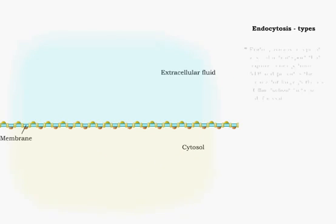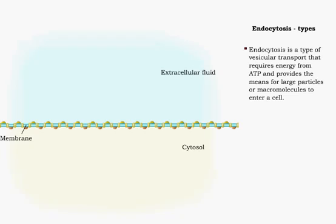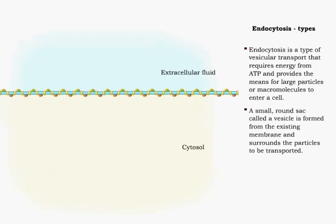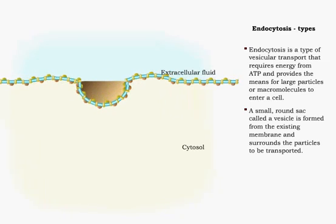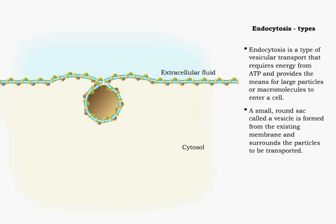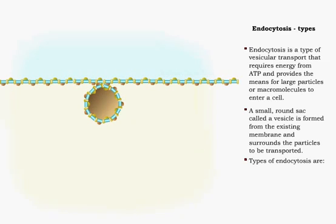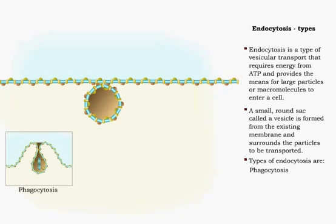Endocytosis is the movement of large particles or macromolecules into the cell. During endocytosis, a small round sac called a vesicle is formed from an existing membrane and used for transport. Three types of endocytosis are phagocytosis, pinocytosis, and receptor-mediated endocytosis.